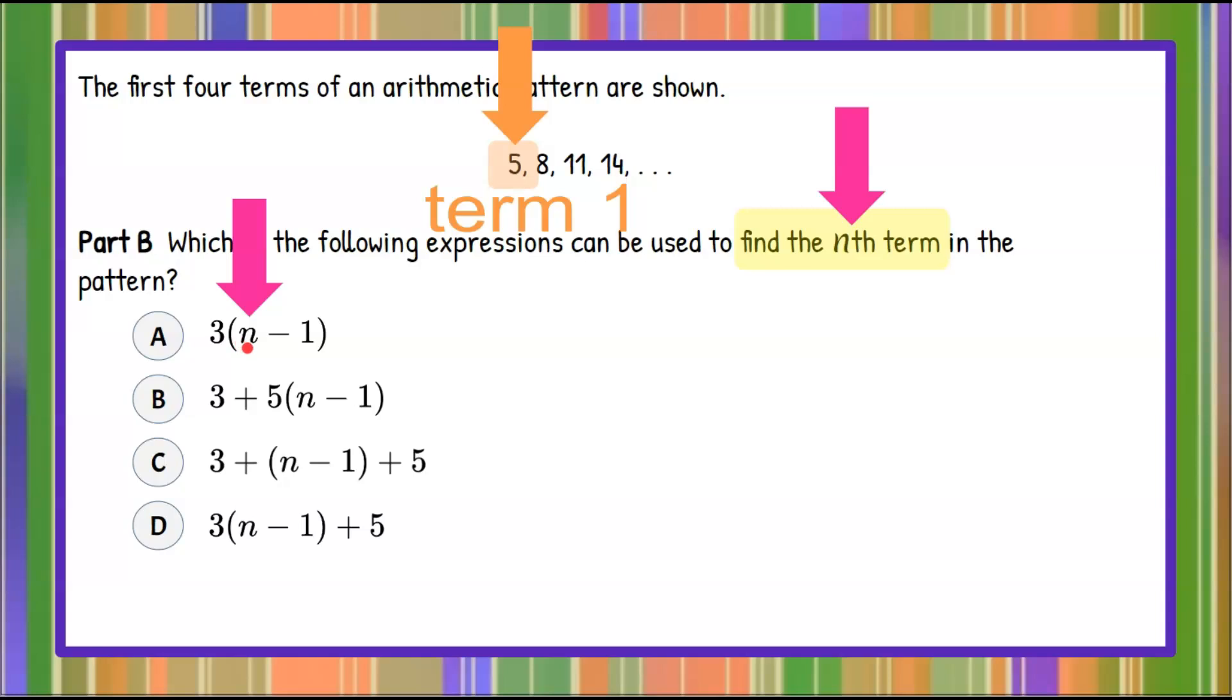I'm going to replace n here with 1. So I have 1 subtract 1 instead of n subtract 1. Well, 1 subtract 1 is 0. So that would be 3 multiplied by 0, and the product of anything multiplied by 0 is 0.